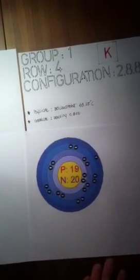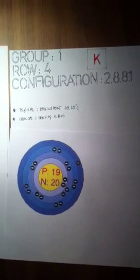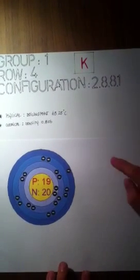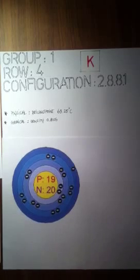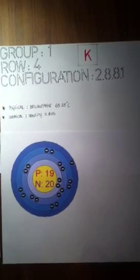Now, the reason potassium is in group 1, row 4, is because the last number is 1, and it has 4 numbers in its configuration, so that means it has a valence energy level of 4.